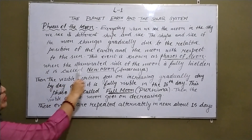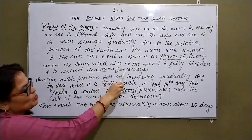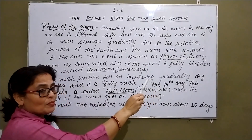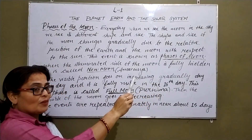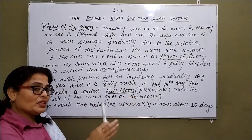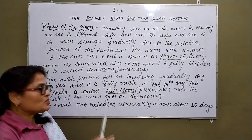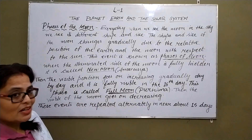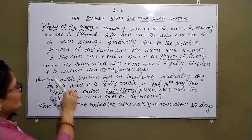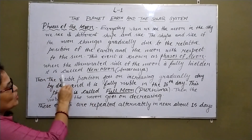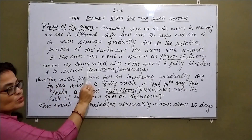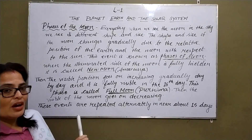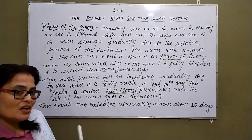When the illuminated side of the moon is fully hidden, it is called new moon. This event is called new moon.